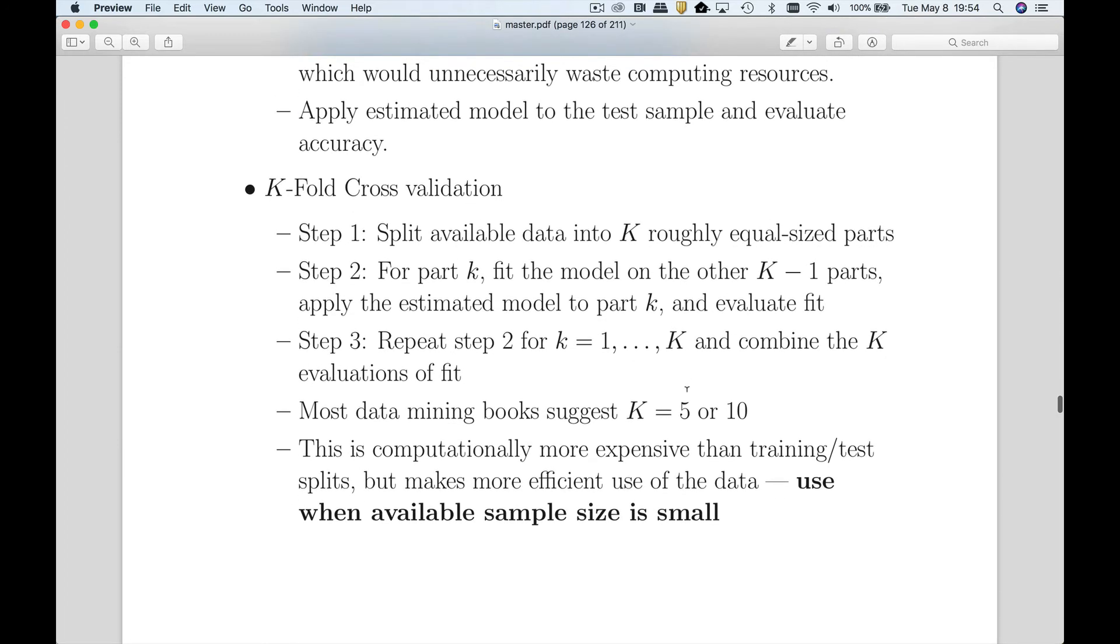What is k-fold cross-validation? K-fold cross-validation makes much more efficient use of the data. What we're first going to do is split our available data at random into K roughly equally sized parts. Then we're going to fit the model K times, leaving out one part at a time. Then we apply the model, the estimated model to the left out part, and get the evaluation error.